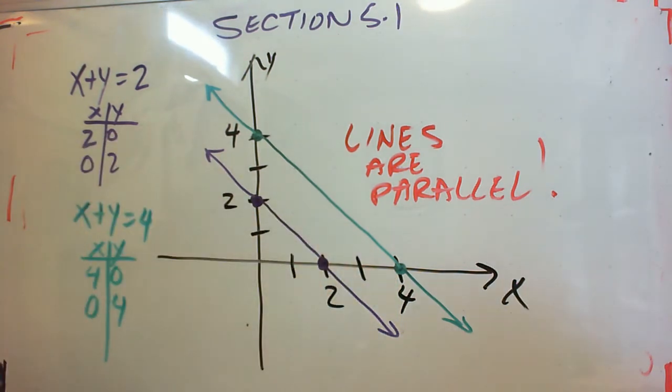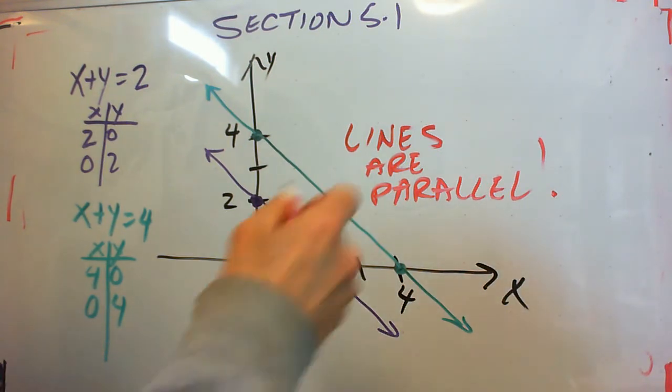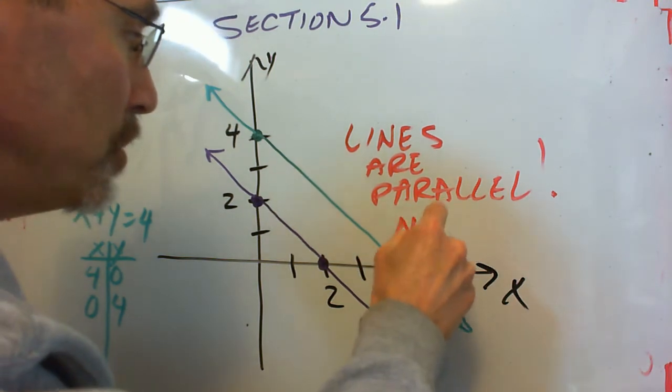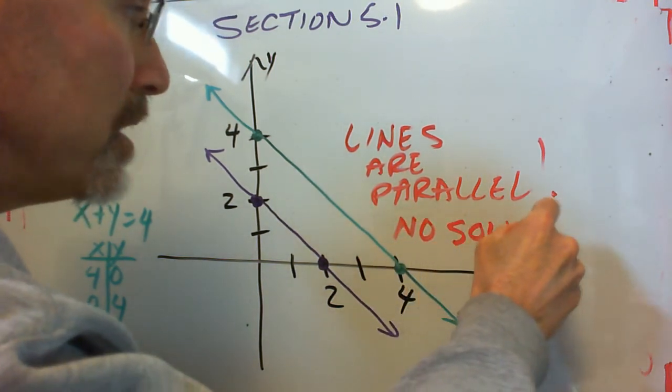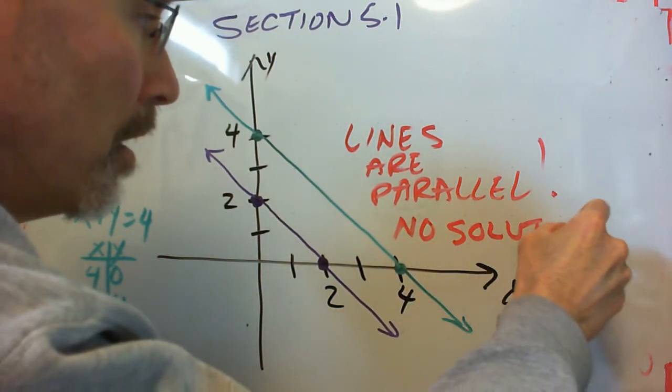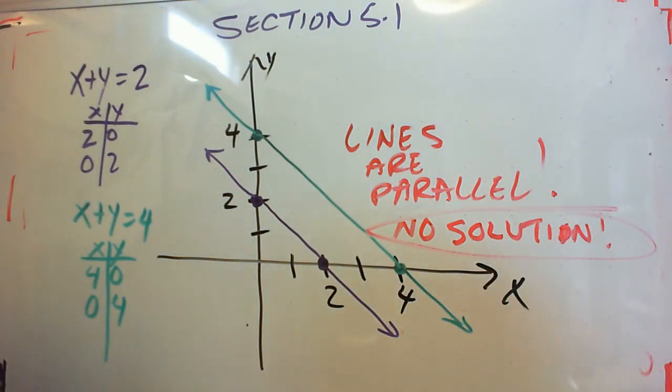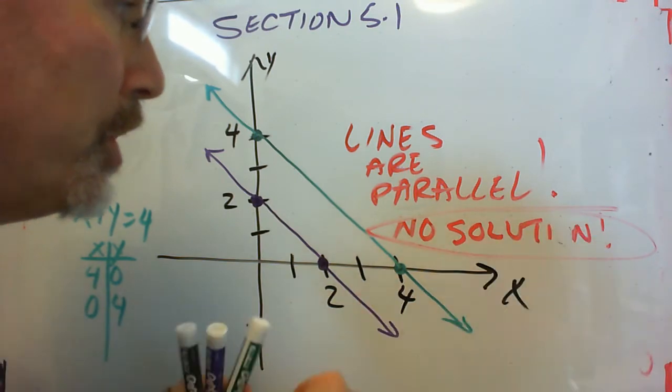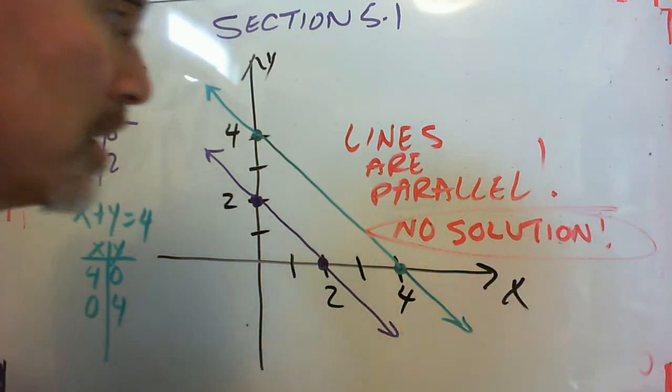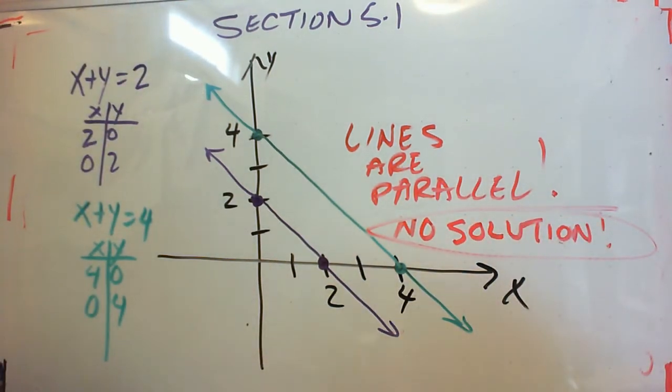And you could rewrite them in slope intercept form and find they have a slope of negative 1. Since the lines are parallel, there is no solution. There is no point of intersection. So that's the answer here. No solution. And that's always the case for two parallel lines.